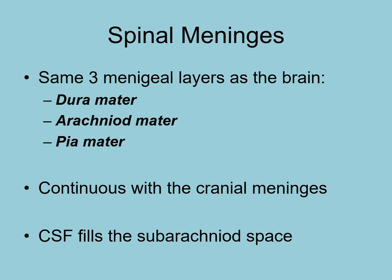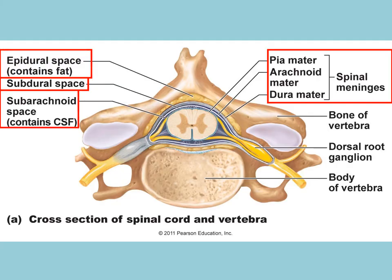The spinal meninges are continuous with the cranial meninges, and the cerebrospinal fluid fills that subarachnoid space. In this cross section of the spinal cord and vertebrae, you can see the vertebrae and the foramen area where the spinal cord runs. You have the epidural space that contains fat, the subdural space, and the subarachnoid space, which contains the cerebrospinal fluid.